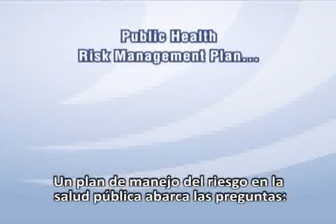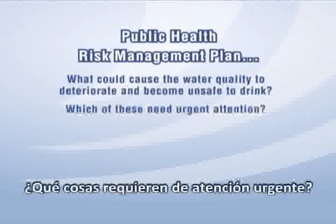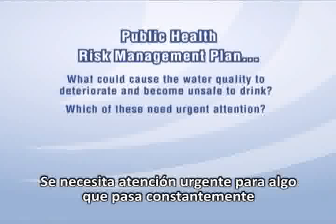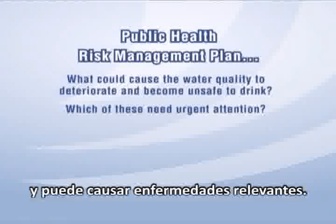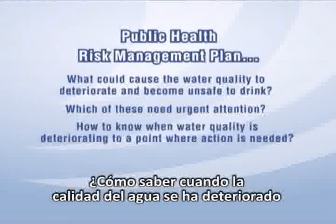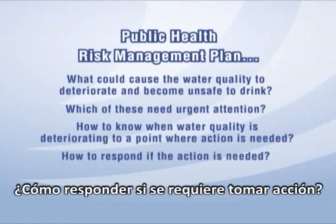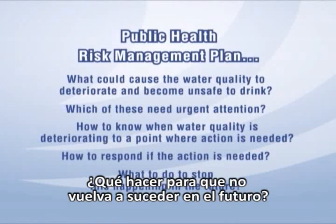A public health risk management plan covers the questions: What could cause the water quality to deteriorate and become unsafe to drink? Which of these need urgent attention? Urgent attention is needed for something that happens a lot and/or could cause significant illness. Other questions the plan covers are: How to know when the water quality is deteriorating to a point where action is needed? How to respond if action is needed? What to do to stop this happening in the future?